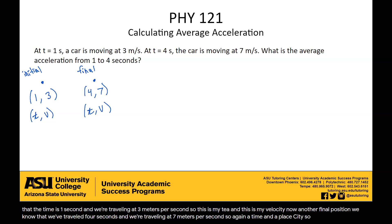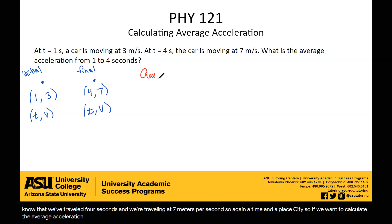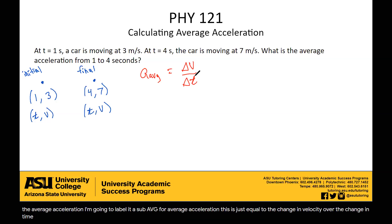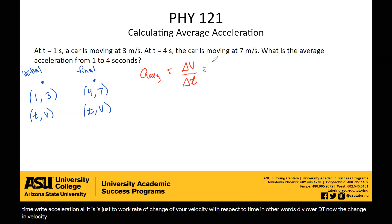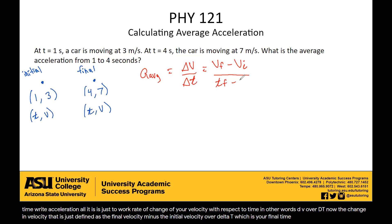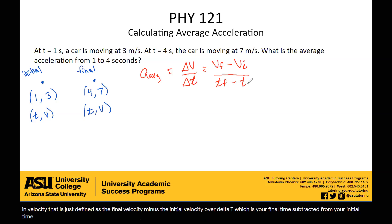So if we want to calculate the average acceleration — I'm going to label it a sub avg for average acceleration — this is just equal to the change in velocity over the change in time. Acceleration is just your rate of change of velocity with respect to time, in other words dv over dt. The change in velocity is defined as the final velocity minus the initial velocity, over delta t, which is your final time subtracted from your initial time.